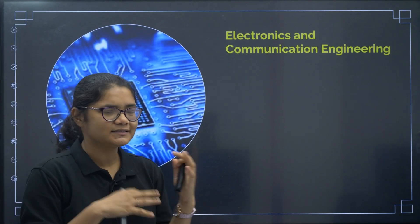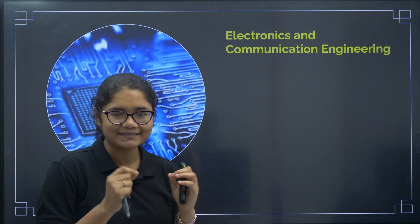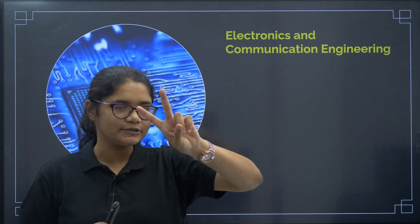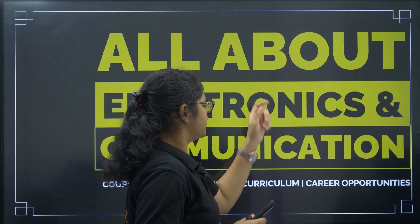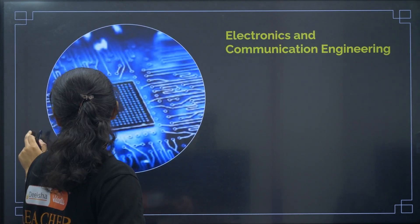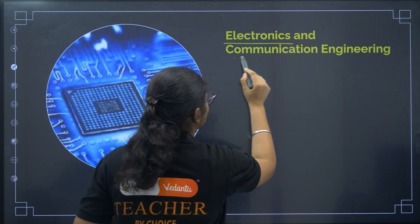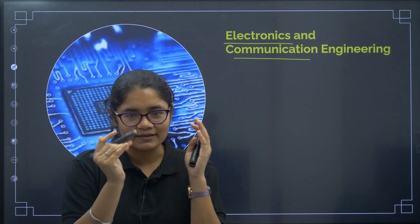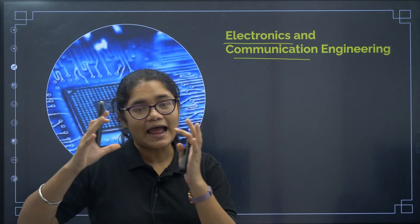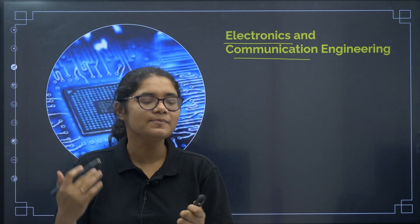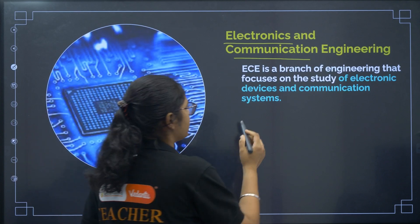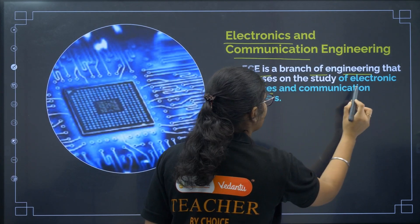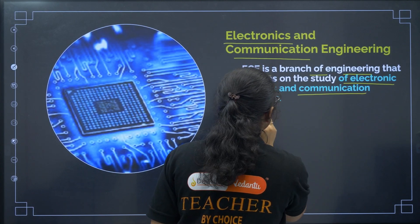Let us start with the very basics. We write it as ECE, which stands for Electronics and Communication Engineering. Here you can see two words — Electronics and Communication. Engineers who are studying ECE work in these two sectors: electronic devices and communication systems. ECE is a branch of Engineering that focuses on the study of Electronic Devices and Communication Systems.